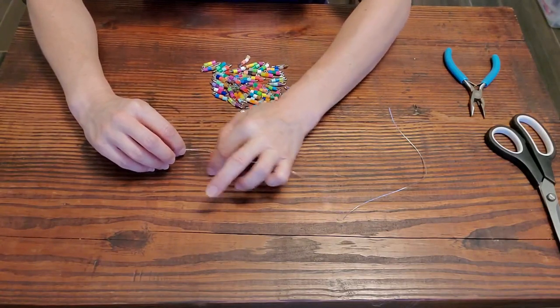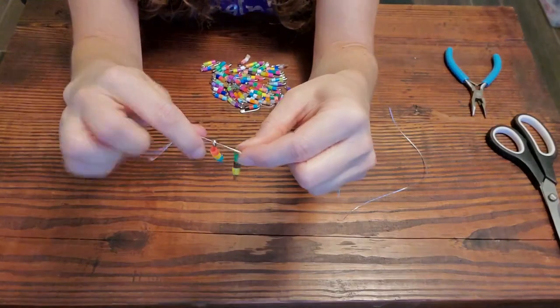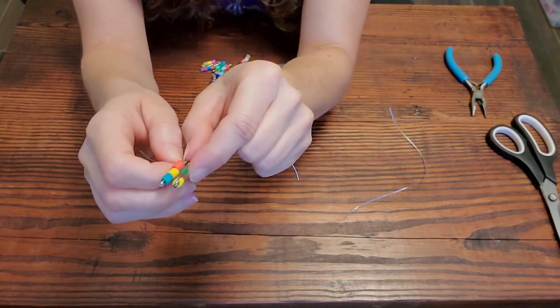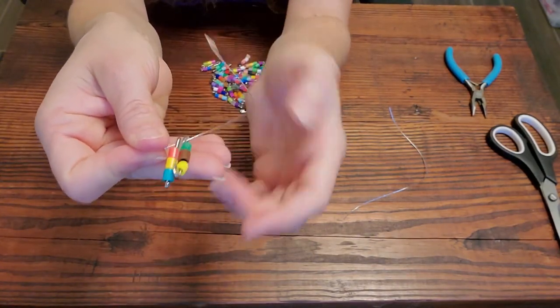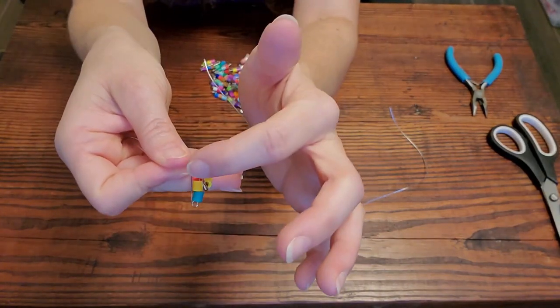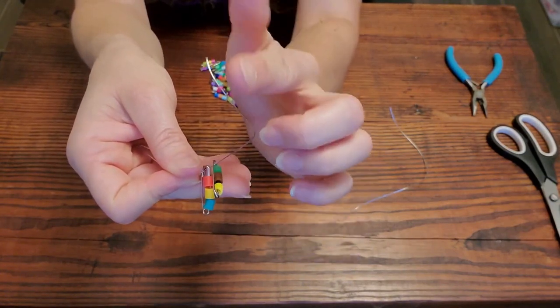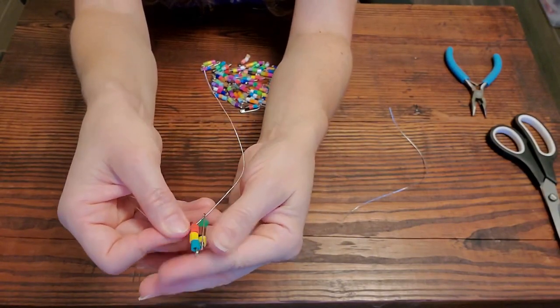So let's see if I did that right. Let's string them together, and I did. So you can see here that I have one with the empty part of the safety pin facing up, and then the other one has the bead part facing up, and we're going to alternate it.